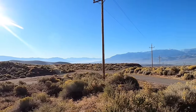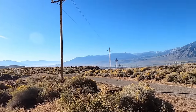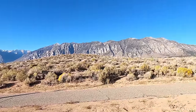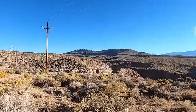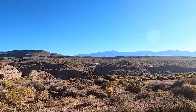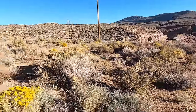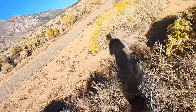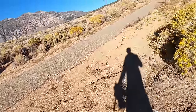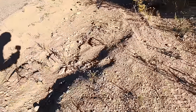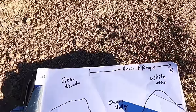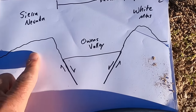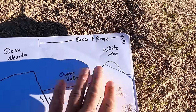We're sitting here in the Owens Valley, which runs north-south with the Sierra Nevada Mountains running up along its west side. If I pan over to the east, out in the distance we can see the White Mountains — another large and imposing mountain range. I've got a simple cross section here showing the Sierra Nevada on the west, the Owens Valley in the middle, and the White Mountains to the east.